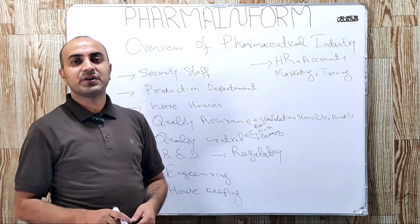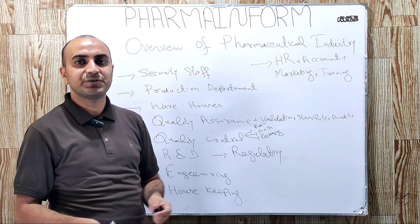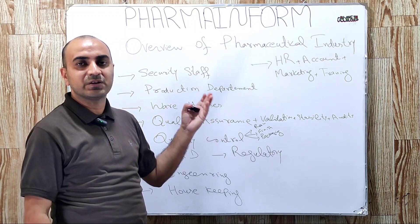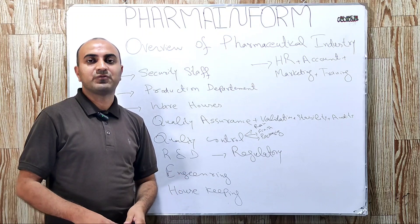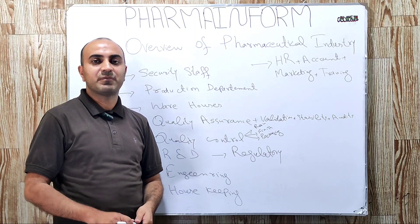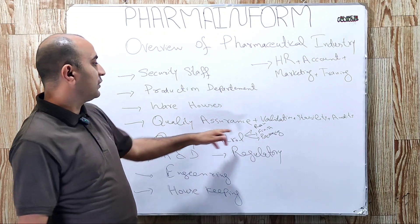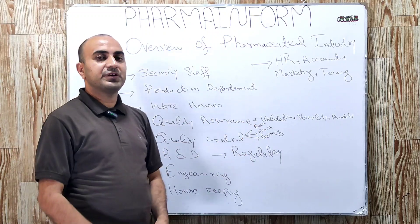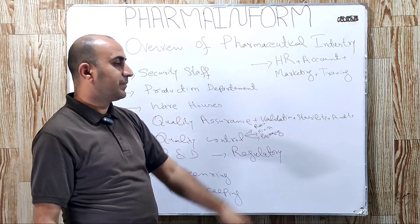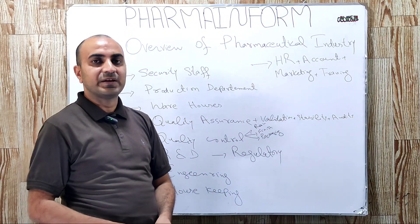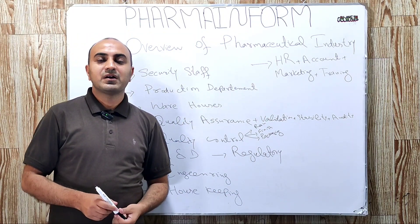The next one is quality assurance. Quality assurance is one of the most important departments in pharmaceutical industries because they are involved in ensuring the quality of products manufactured. Along with the QA department, we have validation department, stability department, and audits department as well.